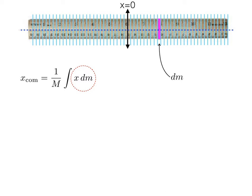We know that x is the variable in this equation, because each of the dm's is at a different distance from the origin. So before integrating, we need to make sure that we've re-expressed dm in terms of dx.